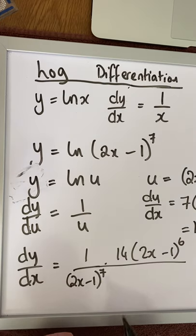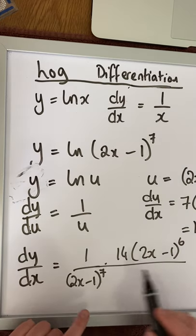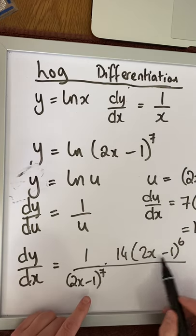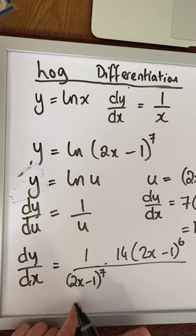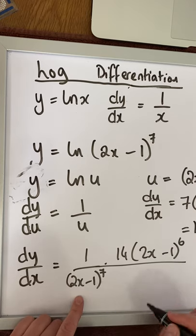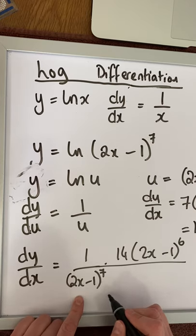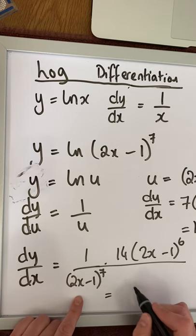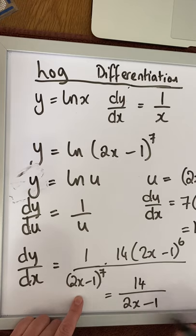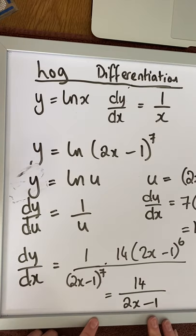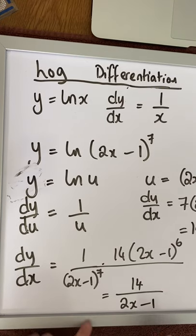u is replaced with 2x minus 1 to the power of 7. In this case we have to simplify. Where we have 2x minus 1 to the power of 6 over 2x minus 1 to the power of 7, that simply gives us 14 over 2x minus 1. So hopefully that makes sense.